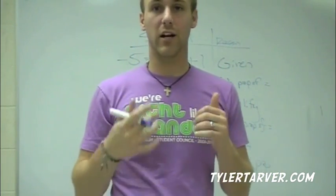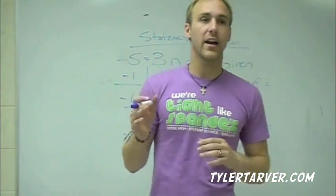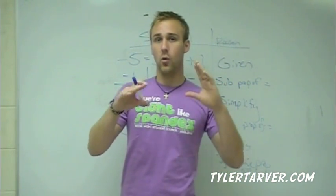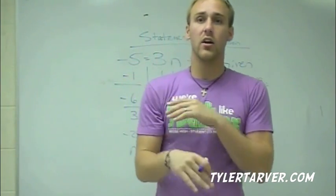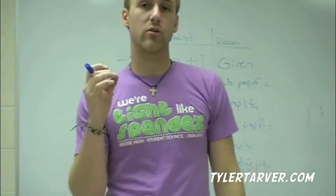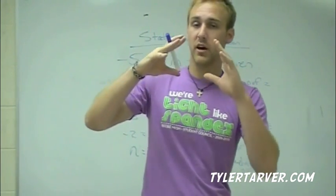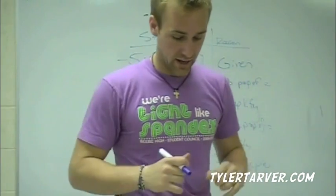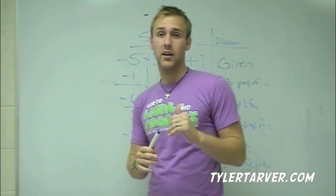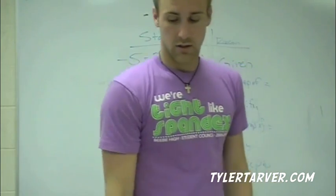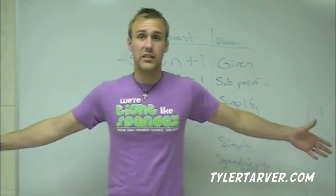Symmetric Property of Congruence: if angle one is congruent to angle two, you can switch it — angle two is congruent to angle one. Transitive Property of Congruence works the same way — cutting out the middle man — but you're dealing with angles or lines, not just numbers. That's it — good luck, hope you all ace it!